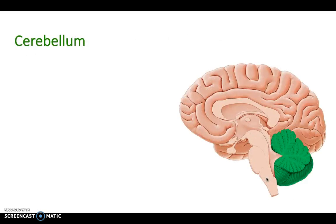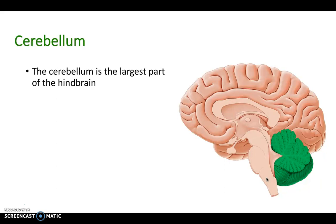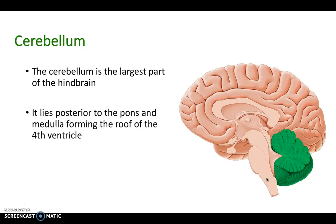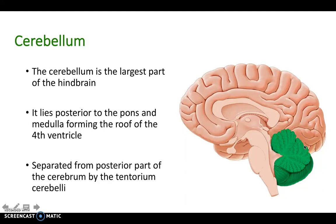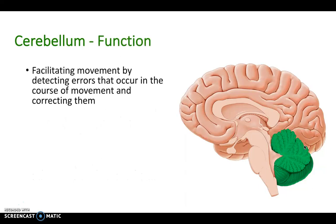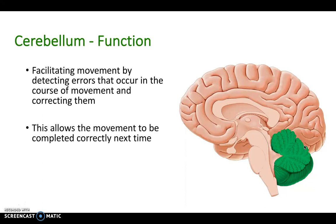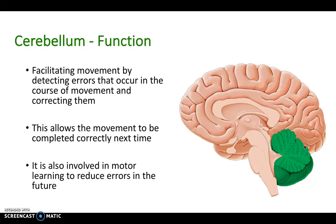Next we have the cerebellum — referred to as the little brain. It lies posterior to the pons and medulla and forms a roof of the fourth ventricle, forming the roof to the posterior aspect of the cerebrum. It facilitates movement by detecting errors that occur within the course of movement, allowing us to correct them so that movement can be completed correctly next time around.